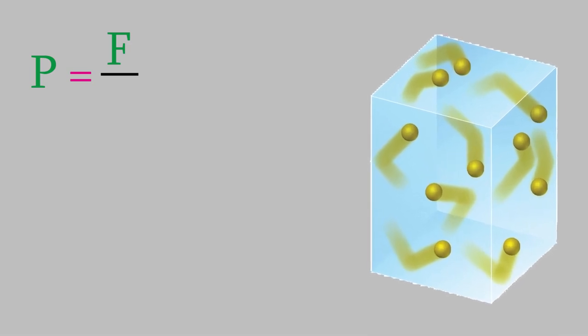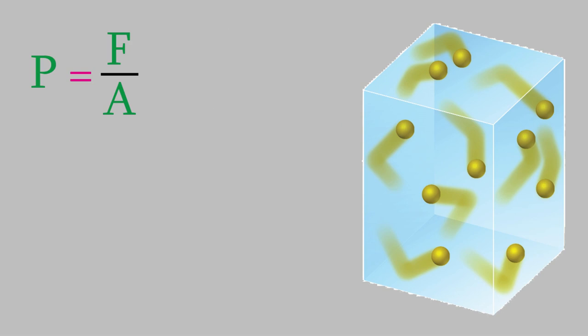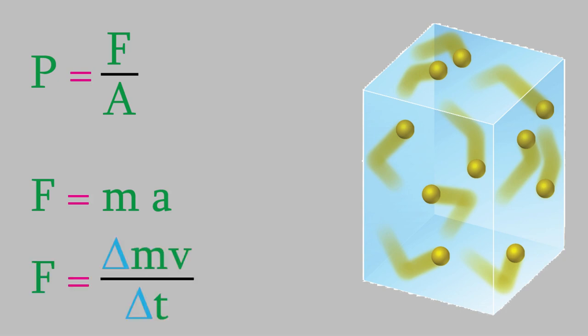The pressure is proportional to the force, and inversely proportional to the inner surface area of the container. Newton's second law of motion tells us that the force exerted by a particle is equal to its mass times its acceleration. In addition, the acceleration is the change in velocity with time, so we can rewrite this force equation this way.